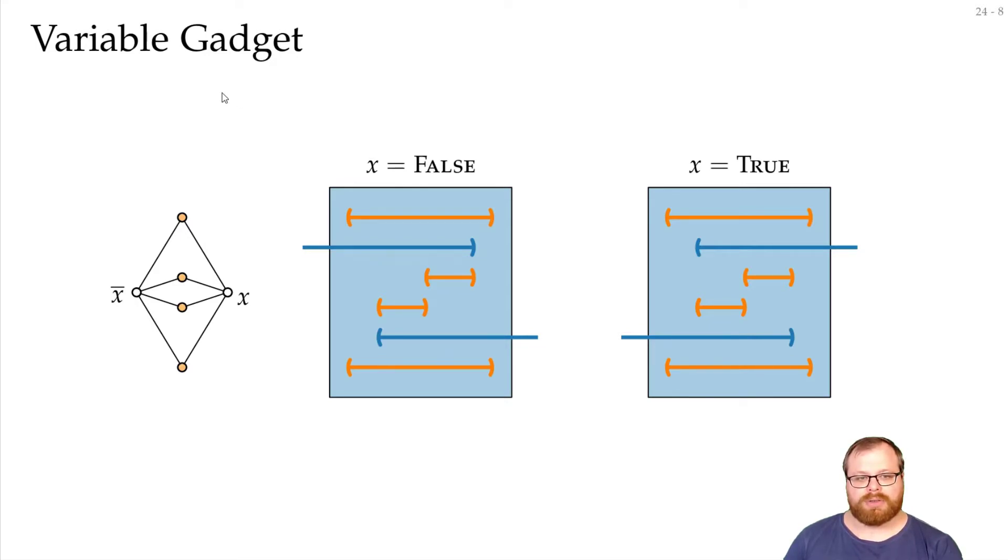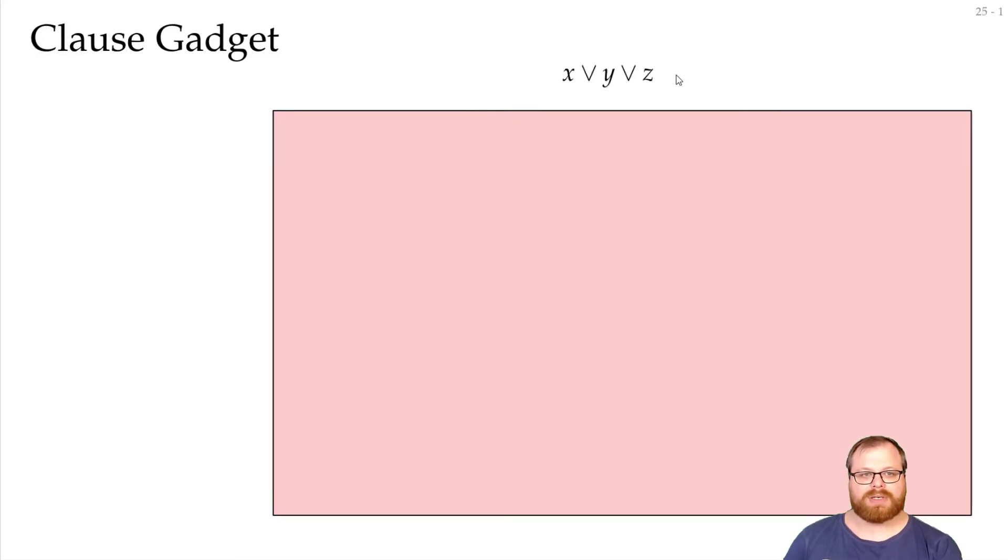What we now have to make sure that if we have a clause with only positive literals, that at least of those has to come from the top. Otherwise, it's not possible. So let's try to build a clause gadget for a clause x or y or z. For the other side where everything is negated, it's exactly the same. So we focus on this part.